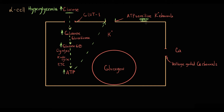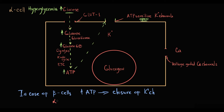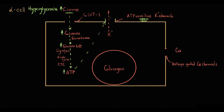If we compare insulin secretion with glucagon secretion, they are very similar, with one huge exception. In insulin secretion, increasing ATP level triggers closure of potassium channels. In the case of glucagon, increasing ATP triggers opening of potassium channels. By keeping potassium channels open, potassium flows out of the cell by concentration gradient.